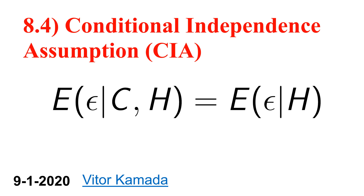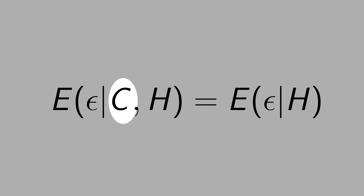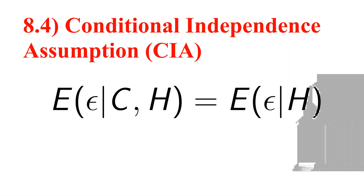In this video, you are going to learn what is the conditional independence assumption. Suppose I want to estimate the effect of college degree on salary. I can only estimate the causal effect of college on salary if college is independent from the error term. College is an endogenous variable — a choice variable where people self-select to go to college. It's clear that college is not independent from the error term. But in econometrics, we have a trick called the conditional independence assumption.